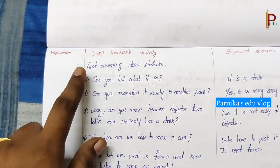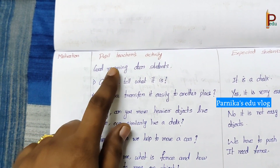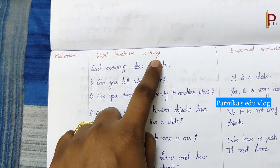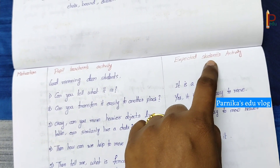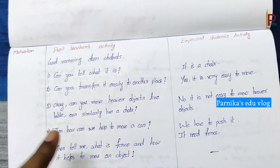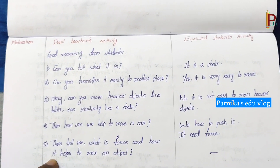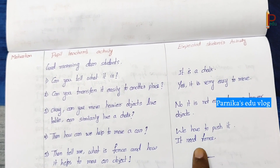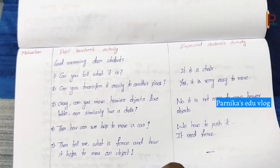Coming to the motivation — first we have to give the motivation and start the teacher's activity. The next column is expected student's activity. These are the questions we have to ask before starting the lesson, and these are the expected answers from the students.